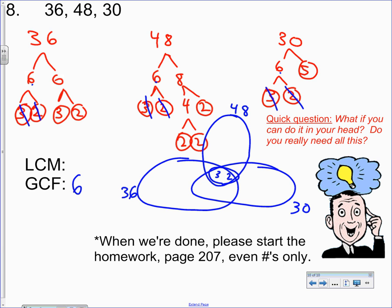36 has a three and a two. 48 has a two, a two, and a two. And 30 has a five. Somebody said, does this two and this two, do they go in the middle since they both have them? I don't believe so. The only we look in the middle for the things that all three of them have.